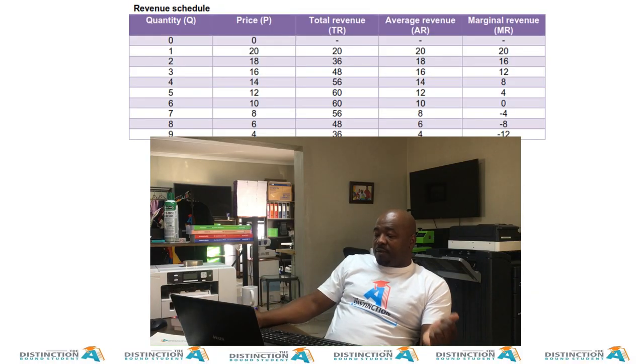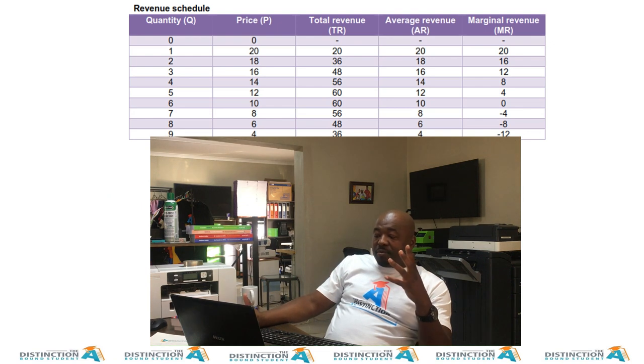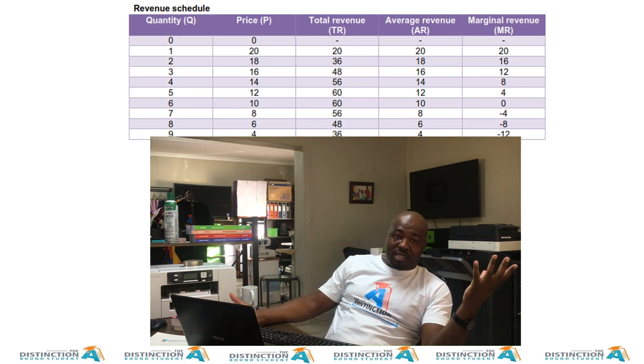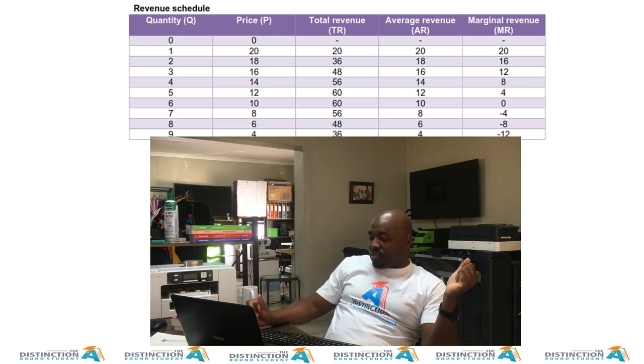Alright, so in this lesson, what we're going to show is normal profit. How can you graphically explain normal profit? Now, to get started, we start with a table that shows why the demand curve for a monopoly looks the way it does. Why is it equal to AR if they are equal? Why is it not equal to MR if they are not equal? That's what we're going to show just now.